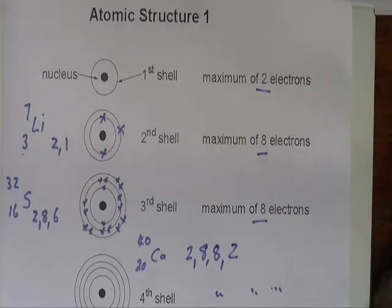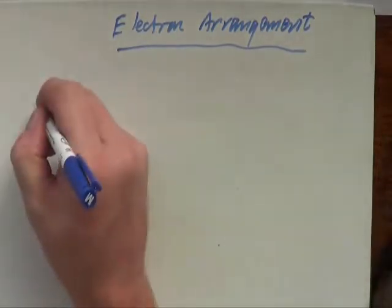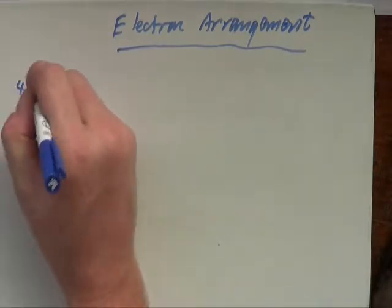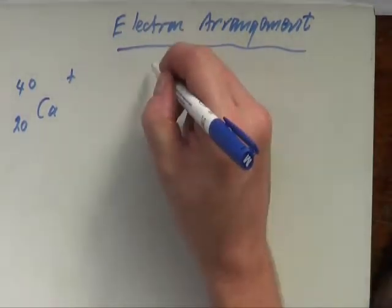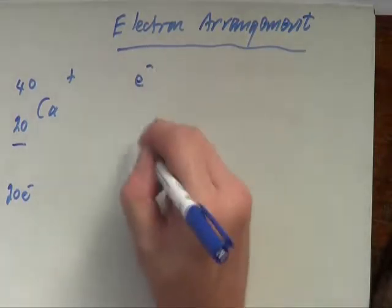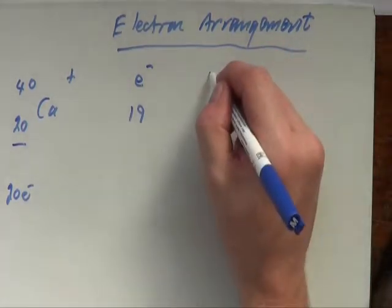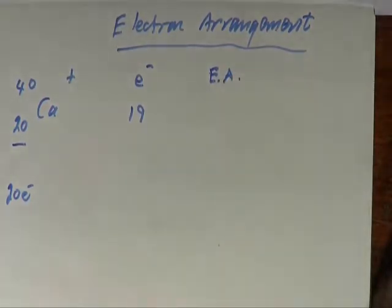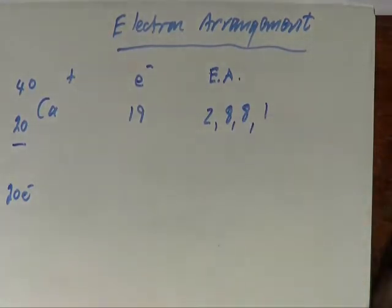Let's look at electron arrangements of atoms and ions which have gained or lost electrons. If the examiner asks for the electron arrangement of calcium as a +1 ion — originally 20 electrons, but there's a plus one charge, so the electron number has gone down by one to 19. The electron arrangement must be two in the first shell, eight bringing us to ten, eight more bringing us to 18, and one in the outer shell — giving 2,8,8,1.